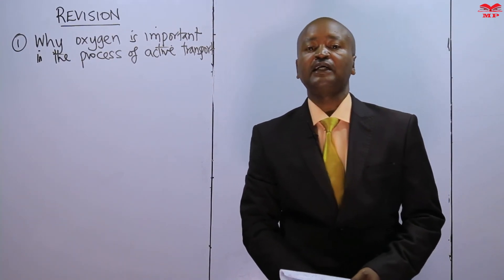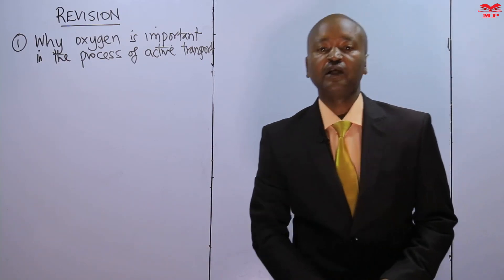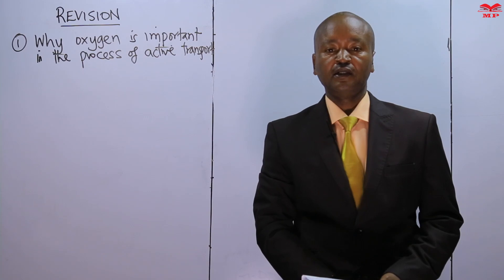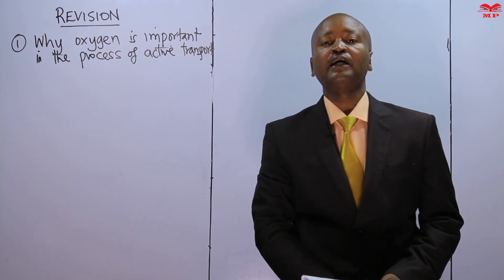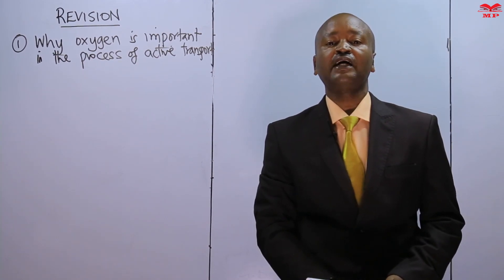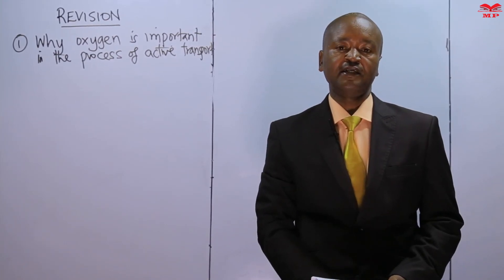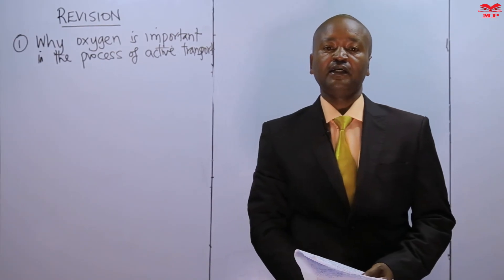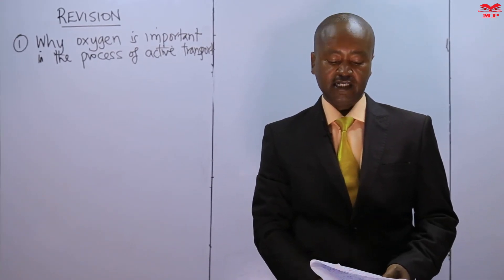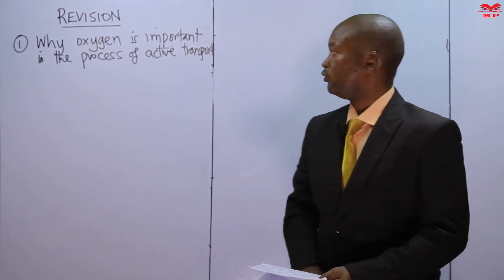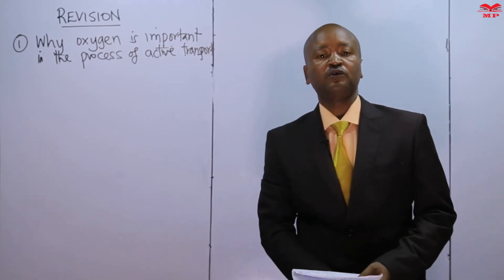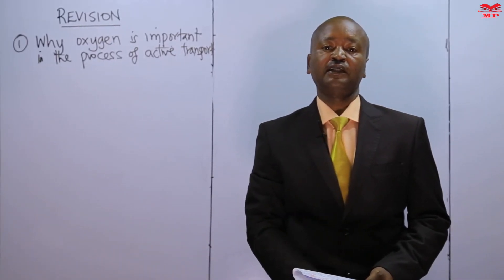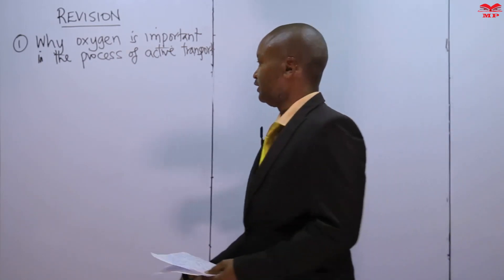Active transport is a physiological process which requires energy. Unlike osmosis and diffusion, which don't require energy, active transport does. The learner should mention how energy is produced — energy is normally produced through aerobic respiration. So if energy is required, then oxygen is necessary because it is required in the process of respiration.